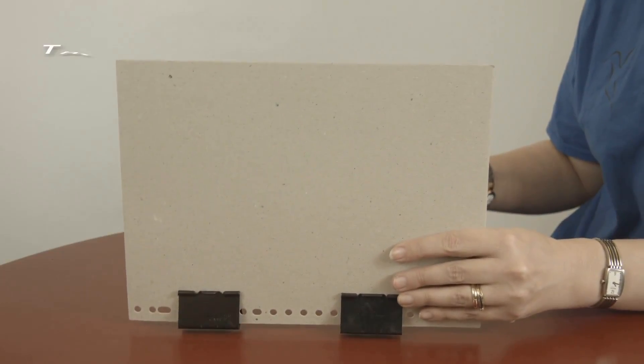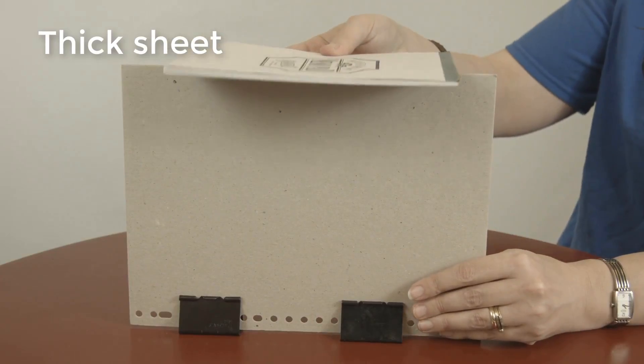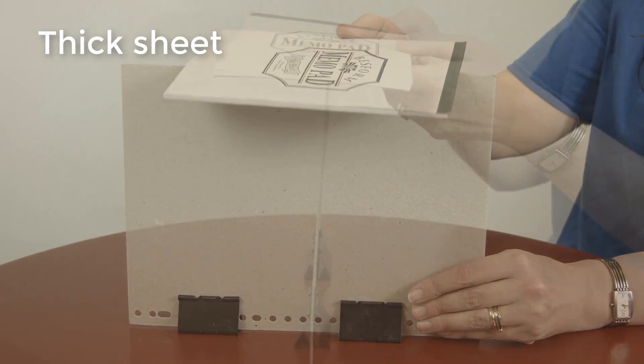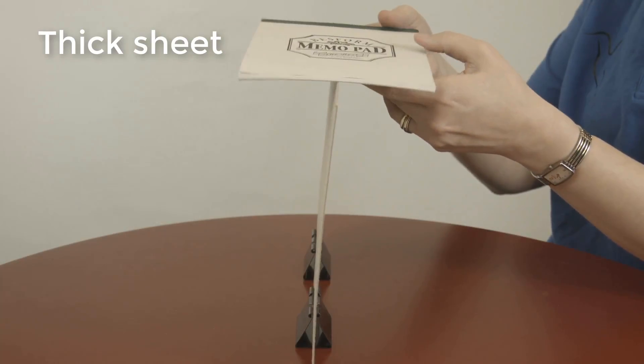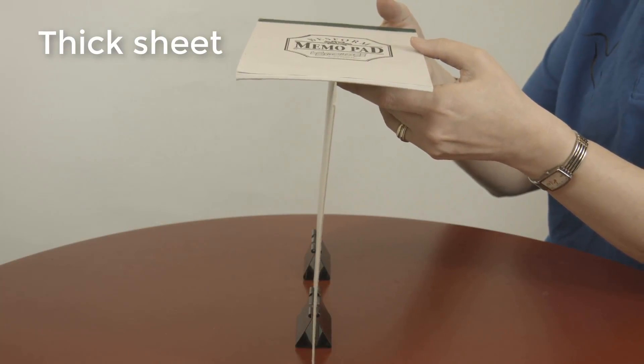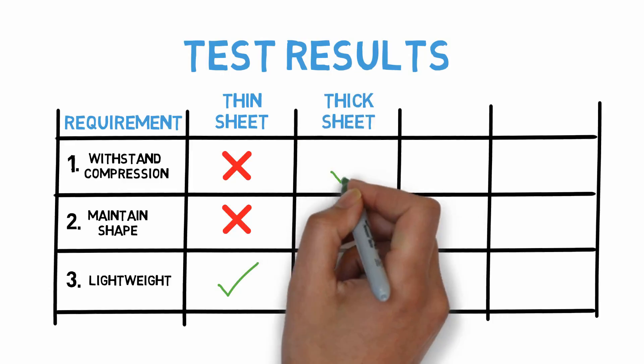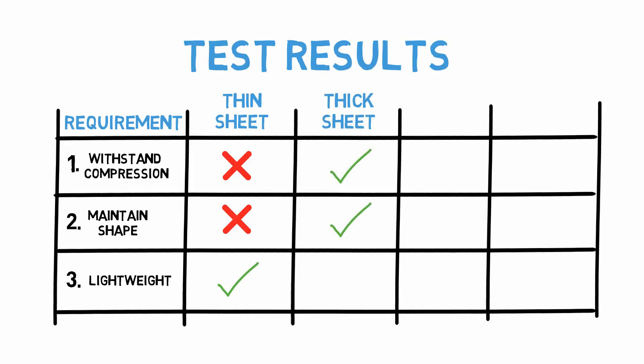What if we try a slightly thicker piece of cardboard? Maybe that would have a different effect. Here we have the back cover of a spiral-bound notebook. Once we actually manage to balance the notepad, it looks like we do have a structure that supports the weight and doesn't bend out of shape. However, it is substantially heavier than our previous test, so we'll keep it in mind, but I'm convinced there's a better solution.